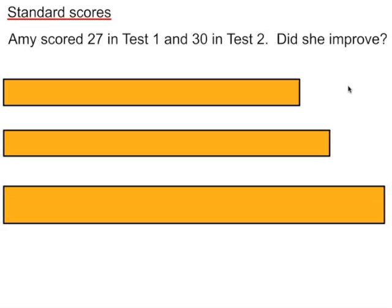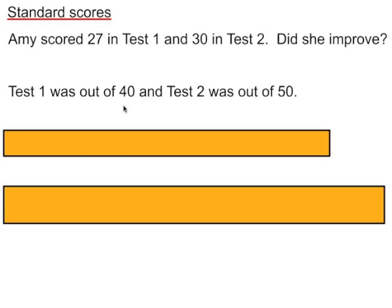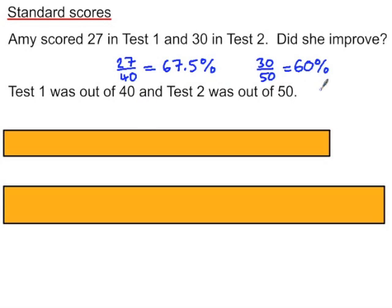In the final part of this lesson we're going to look at standard scores. Amy scored 27 in test 1 and 30 in test 2. If test 1 was out of 40 and test 2 was out of 50, you might convert these to percentages — which suggests she did not improve. But it might be that test 2 was harder than test 1, so we really need to know the mean scores for the class.